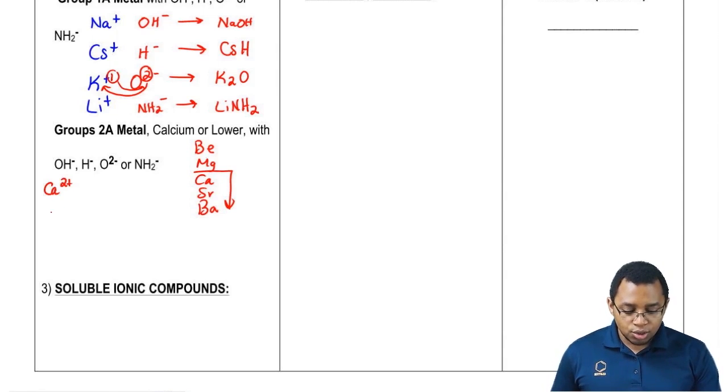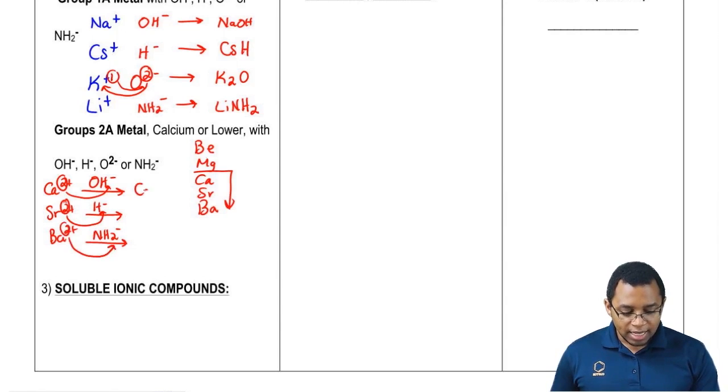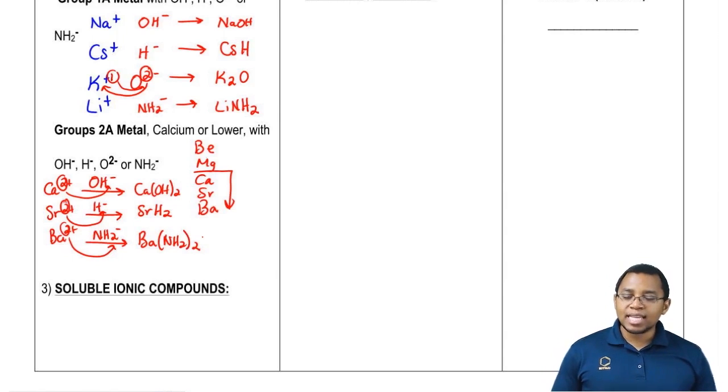All of them are in group 2A, so they're all plus 2. If we combine some of them with some of these ions, just remember the two from here will move down here, the two from here will move over here, the two from here will move over here. We get Ca(OH)2, SrH2, BaO. These are all common examples of strong bases from group 2A.